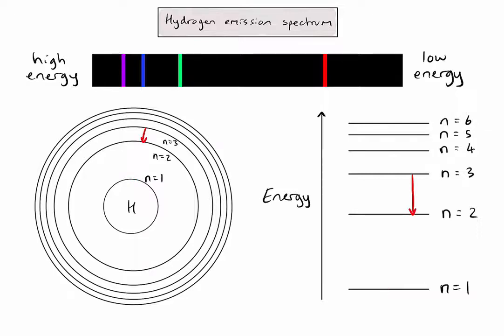The next highest energy emission is the green line, representing the next biggest drop to the second energy level, which would be from the fourth energy level. The blue line must represent a drop from the fifth energy level to the second. And finally, the violet line must represent a drop from the sixth energy level down to the second.